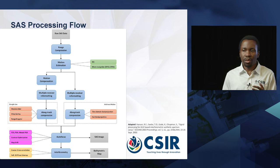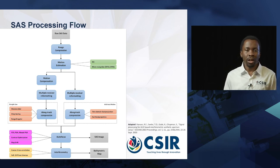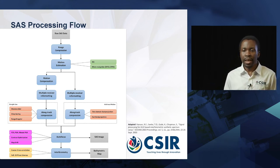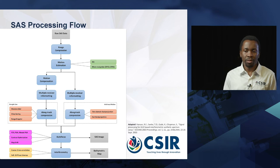Here is a brief rundown of the processing flow for SAS imaging. You start with raw SAS data and perform range compression in the range direction. Then you carry out an estimate of the motion of the SAS to compensate for unwanted motion errors. Depending on whether you use straight-line or arbitrary along-track compression, you would then perform a series of motion compensation and multiple-receiver-to-single-receiver reformatting. Finally, you carry out along-track compression, which produces an initial SAS image. To improve quality, an additional autofocusing step is performed using a number of autofocusing techniques. There is also an optional step of carrying out interferometry, which generally requires two parallel SAS arrays.